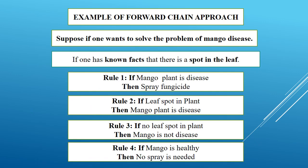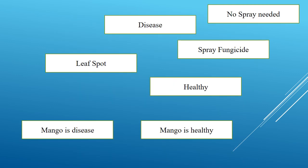For example, if there is leaf spot in the plant, then the mango plant has a disease. There is leaf spot, so the mango plant is diseased, and we want to spray fungicide — that is the solution. The known fact is there is leaf spot. By using the known facts, the inference engine will conclude the solution that we want to spray fungicide. So in the forward chain, we know some facts, and based on those facts, the inference engine applies the reasoning technique to the knowledge base and arrives at a solution.